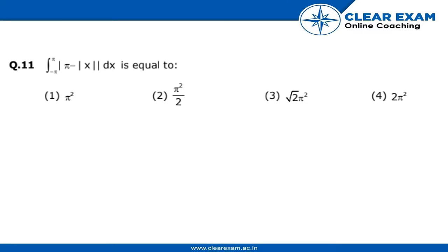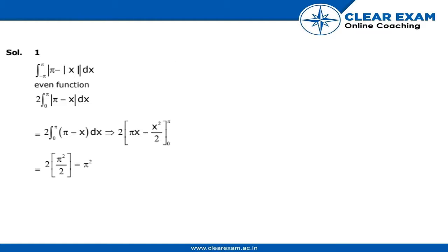The integration with the limits minus pi to pi of modulus pi minus modulus x dx is equal to what? We know that this integration is an even function, so we can apply the even function formula here, from where 2 comes out.